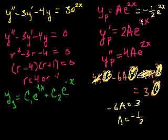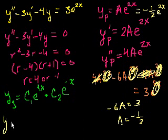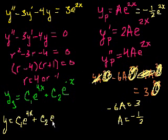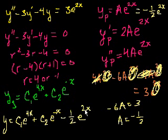Our general solution to the non-homogeneous equation is the particular solution plus the general homogeneous solution: y = c₁e^(4x) + c₂e^(−x) − (1/2)e^(2x). Pretty neat! In the next video, we'll do a couple more examples — we'll try functions other than exponentials, like polynomials and trig functions.